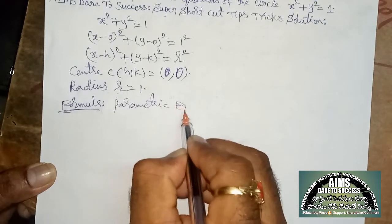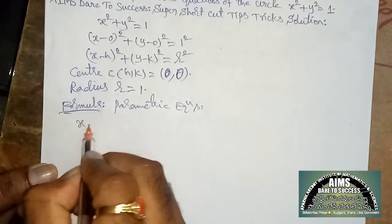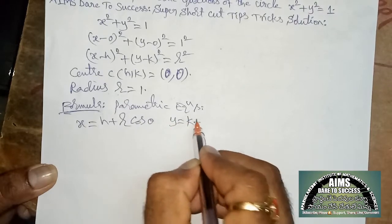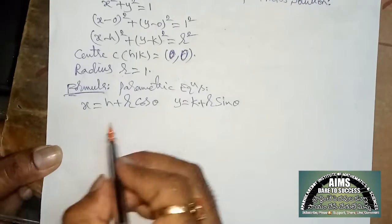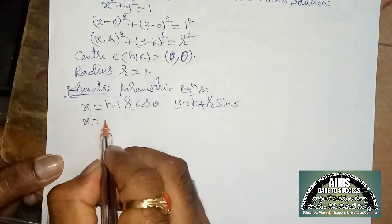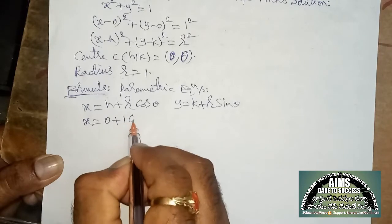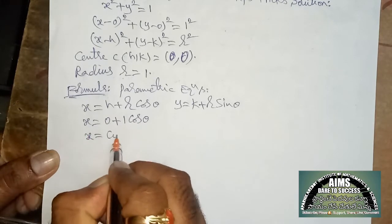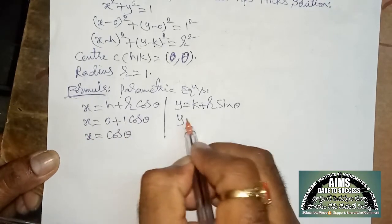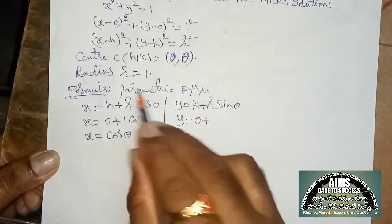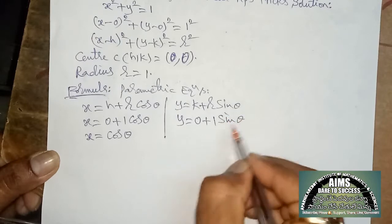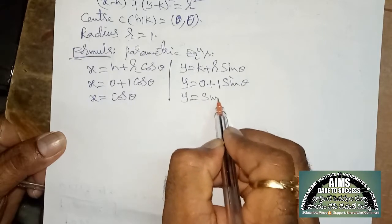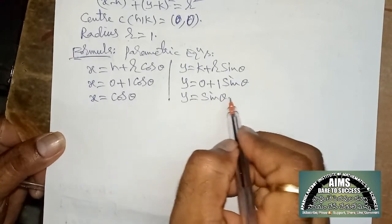Parametric equations: x = h + r·cos θ and y = k + r·sin θ. Substituting h = 0 and r = 1, we get x = 0 + 1·cos θ = cos θ. And y = 0 + 1·sin θ = sin θ. So x = cos θ and y = sin θ are the parametric equations of the given circle.